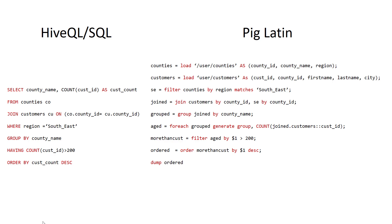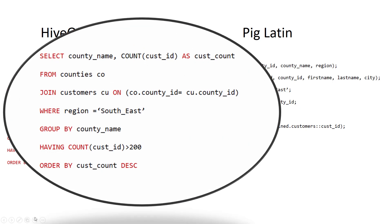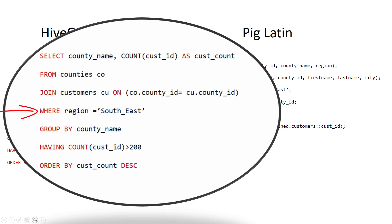Here we have a comparison of the same query in HiveQL SQL and in Pig Latin. In the SQL query, we select the county name and a count of the customer IDs, storing that count in a variable called customer_count. We pull this from a table called counties, join it to a table called customers on the county IDs, filter for the southeast region, group by those counties, and only include records where the customer ID number is greater than 200.